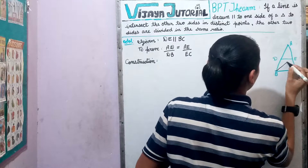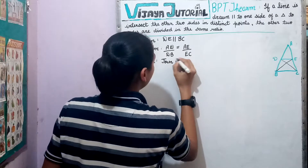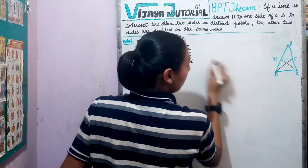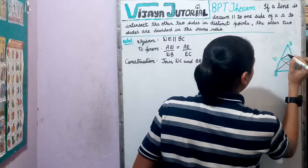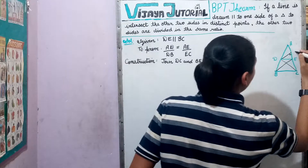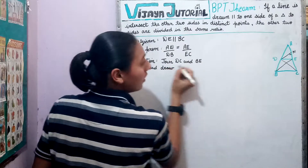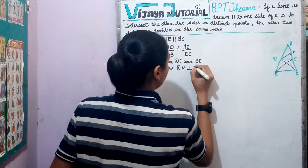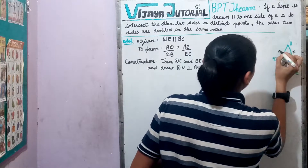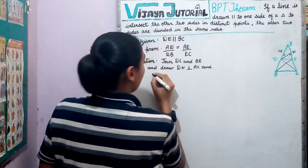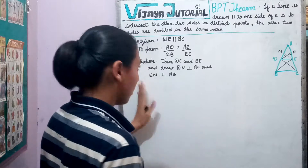Construction: Join BE and DC. Draw DN perpendicular to AC, and draw EM perpendicular to AB. This was all in our construction part.